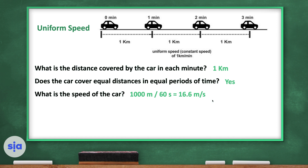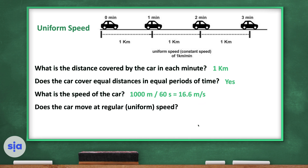It's tricky — the unit for calculating speed is meters per second, but here the units are kilometers and minutes. We have to convert: one kilometer equals 1,000 meters and one minute equals 60 seconds. So 1,000 meters divided by 60 seconds gives 16.6 meters per second. Yes, the car moves at regular uniform speed.